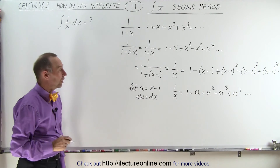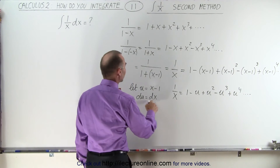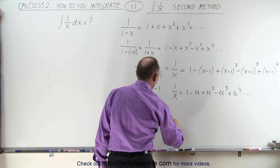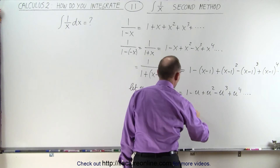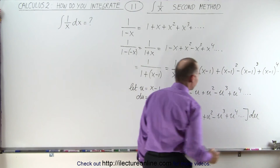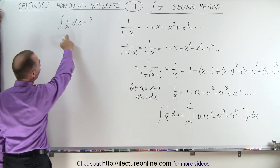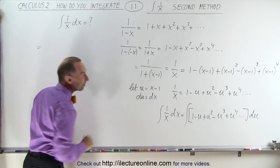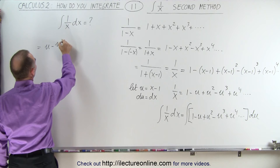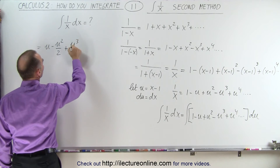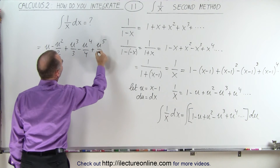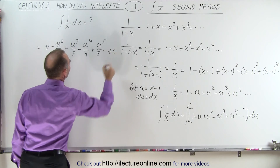Now we can take the integral of both sides. Since du is equal to dx and u is equal to x minus 1, the integral of 1 over x dx must be equal to the integral of 1 minus u plus u squared minus u cubed, and so on, times du. When we integrate that, we get u minus u squared over 2 plus u cubed over 3 minus u to the fourth over 4 plus u to the fifth over 5, and so on, plus a constant of integration.